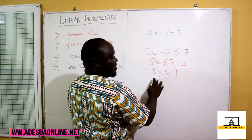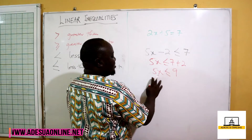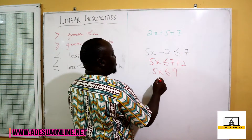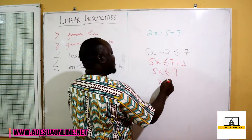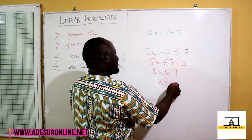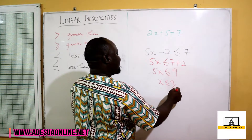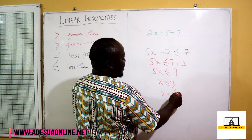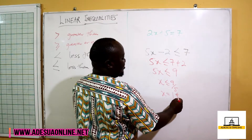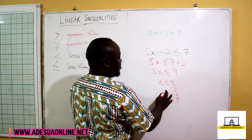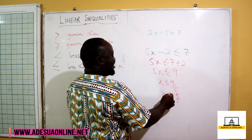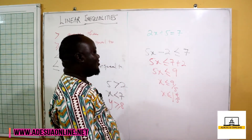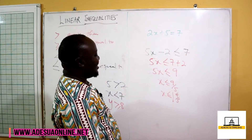So if we want x, we are going to divide both sides by 5. So we have x is less than 9 over 5, which is x less than or equal to 1 and 4 over 5.